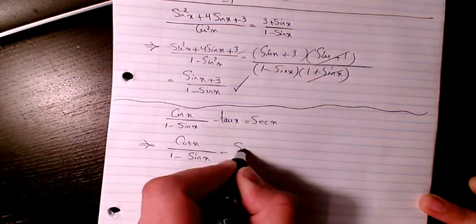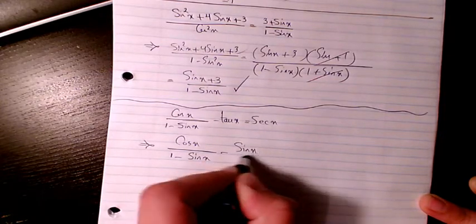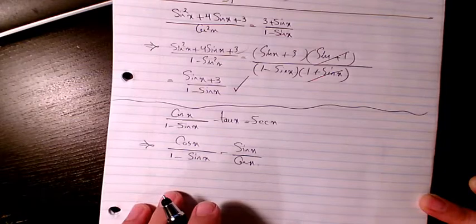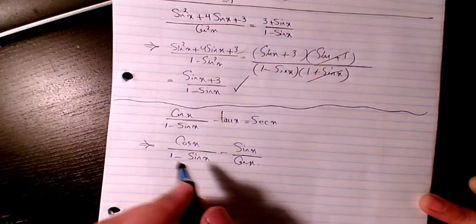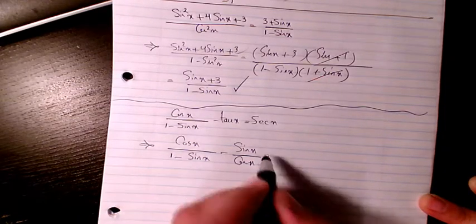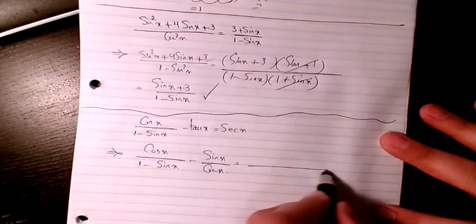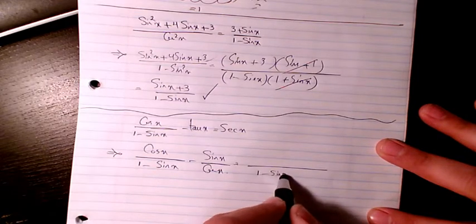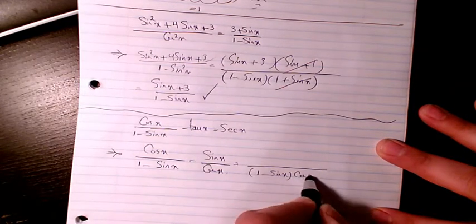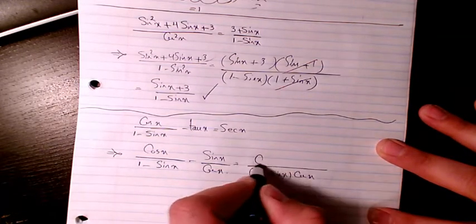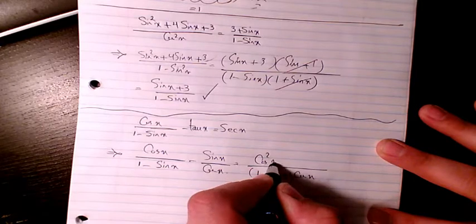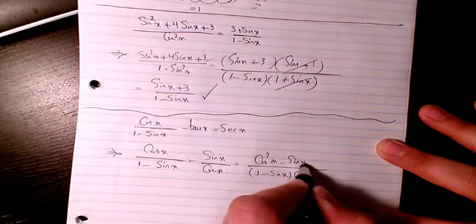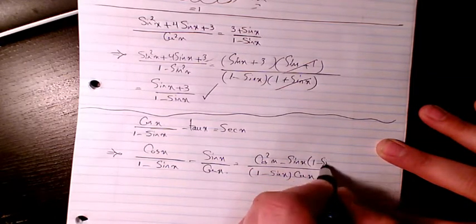Minus sine x divided by cosine x. I can use the common denominator of 1 minus sine x times cosine x, giving cosine squared x minus sine x times 1 minus sine x.